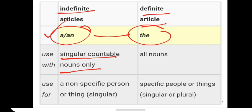Not used normally. Then the, as I said, is flexible. You can use this before every noun. Now the second thing is we don't use a and an before specific. We use it before non-specific. When we are talking about generally and the is used before specific people or thing.